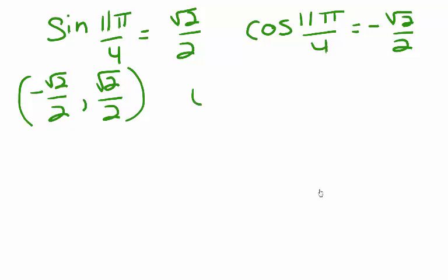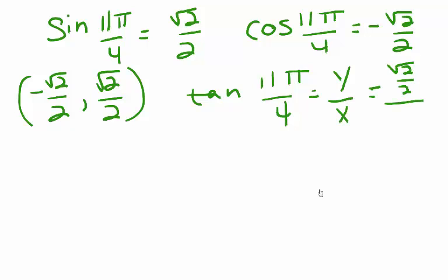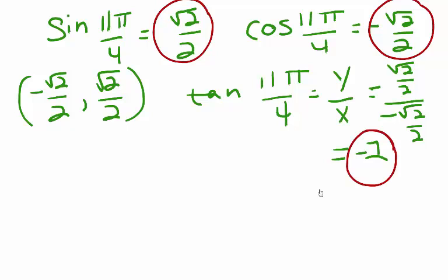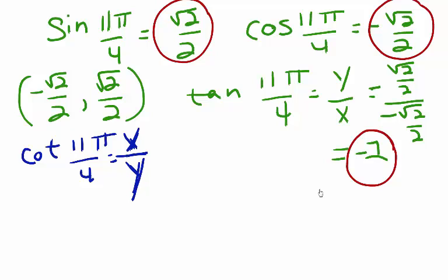To find tangent of 11 pi over 4, that's the coordinate y over x, so that is square root 2 over 2 divided by negative square root 2 over 2, which equals negative 1. Cotangent of 11 pi over 4 is equivalent to coordinate x over coordinate y — so negative square root 2 over 2 divided by square root 2 over 2, which also equals negative 1.